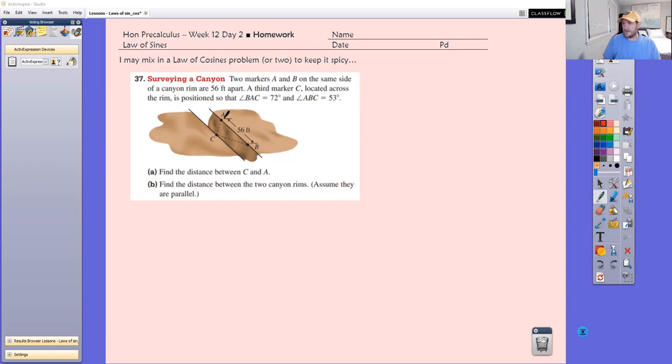37 says we're surveying a canyon. It says there's two markers A and B on the same side of a canyon rim. They're 56 feet apart, and that's all labeled. A third marker C is located across the rim positioned so that the measure of BAC, that's this guy, is 72. And ABC, that's this guy, is 53. So I would redraw this whole thing.